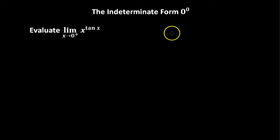In this video, we'll walk through an example of the indeterminate form 0 to the 0. Let's say we have the limit of x to the tangent of x taken as x approaches 0 from the right.